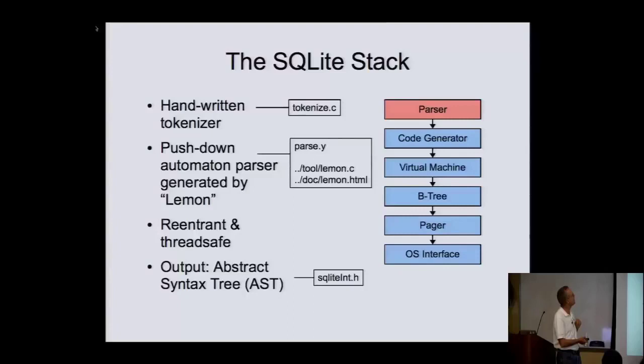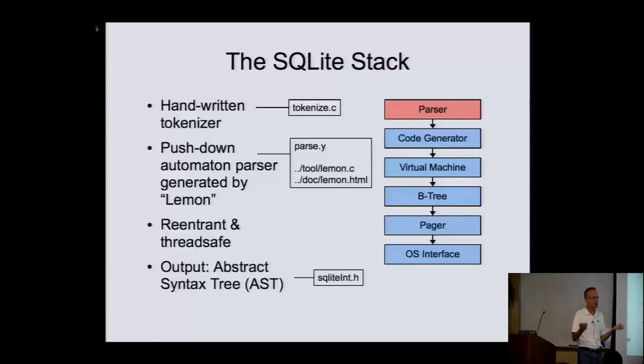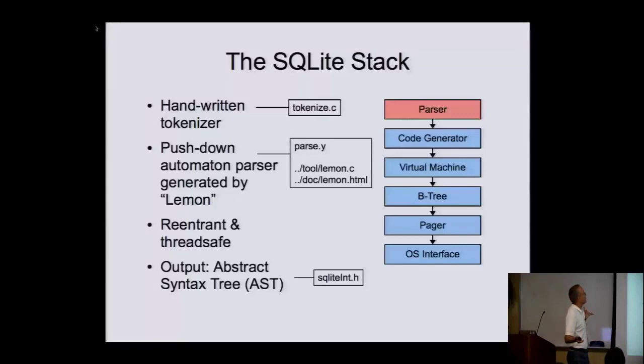At the top there's a parser — it's a standard kind of parser. The tokenizer is written by hand in only a couple hundred lines of code. I've never understood why textbooks spend big chapters on Lex and lexers, because it's so easy to write a tokenizer in a couple hundred lines of C code that is at least two orders of magnitude faster than anything Flex will ever generate. This is just the tokenizer — just splitting it up into tokens.